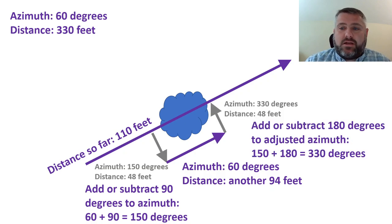Then you subtract or add 180 degrees to the adjusted azimuth, the 150 degrees in this example that you went off of your original direction. Basically what you're doing is you're simply taking what you did to avoid the obstacle and you're reversing it. You go back the exact same distance you went out, 48 feet.